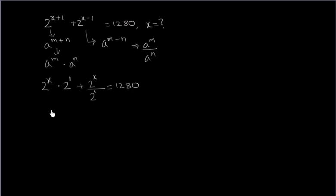Now if you look, in both of these terms, 2 to the power x is common. So if I take 2 to the power x as a common factor, here only 2 is left plus 1 by 2.